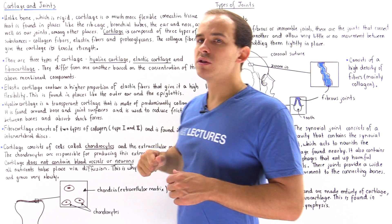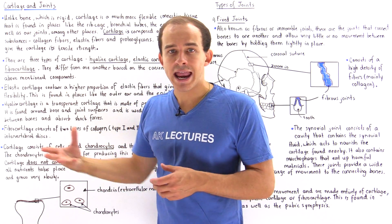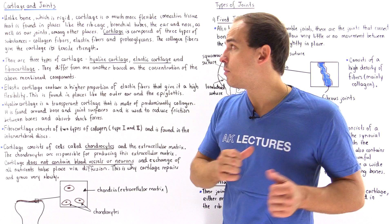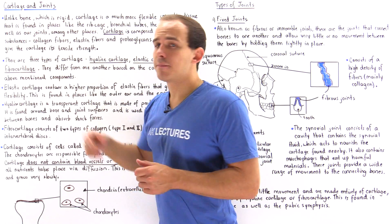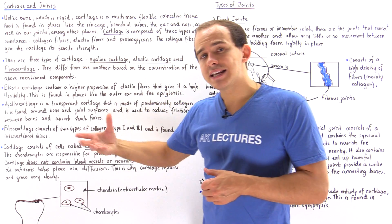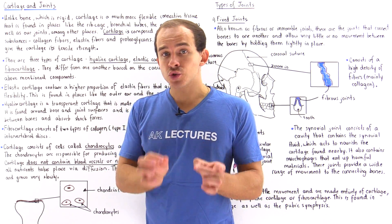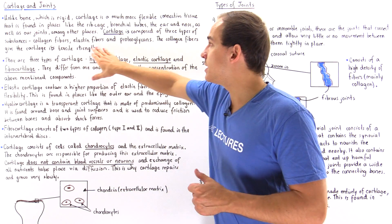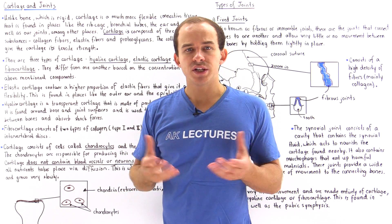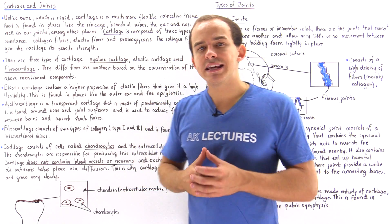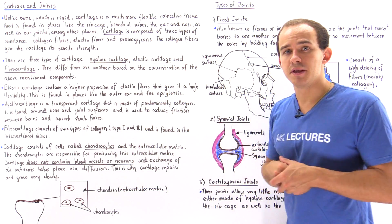Proteoglycans are proteins that contain sugar components. The collagen fibers are those proteins that give our cartilage its strength, and the elastin fibers are those proteins that give the cartilage its flexibility.